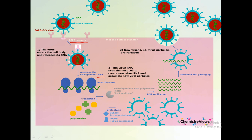The virus RNA then uses the host cell's machinery to create new virus RNA and assemble new viral particles — producing genetic material, proteins, and everything needed. It hijacks the cell's machinery to produce new virus particles, which are then released from the infected cell and are free to infect nearby healthy cells.